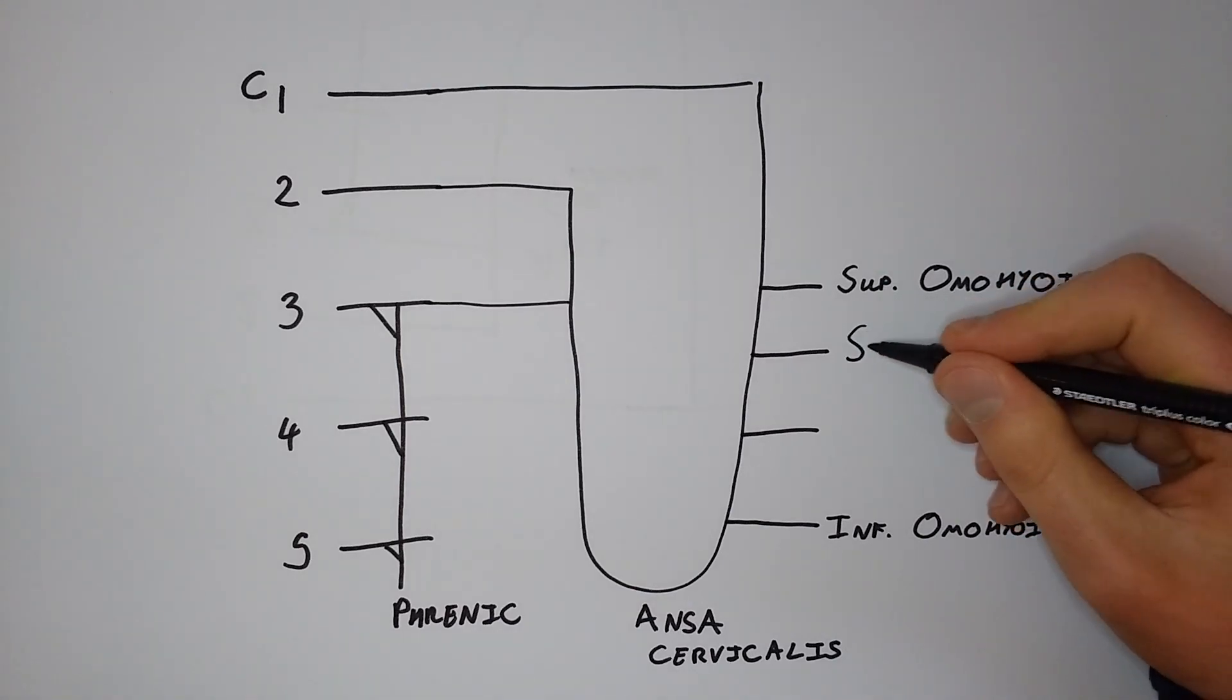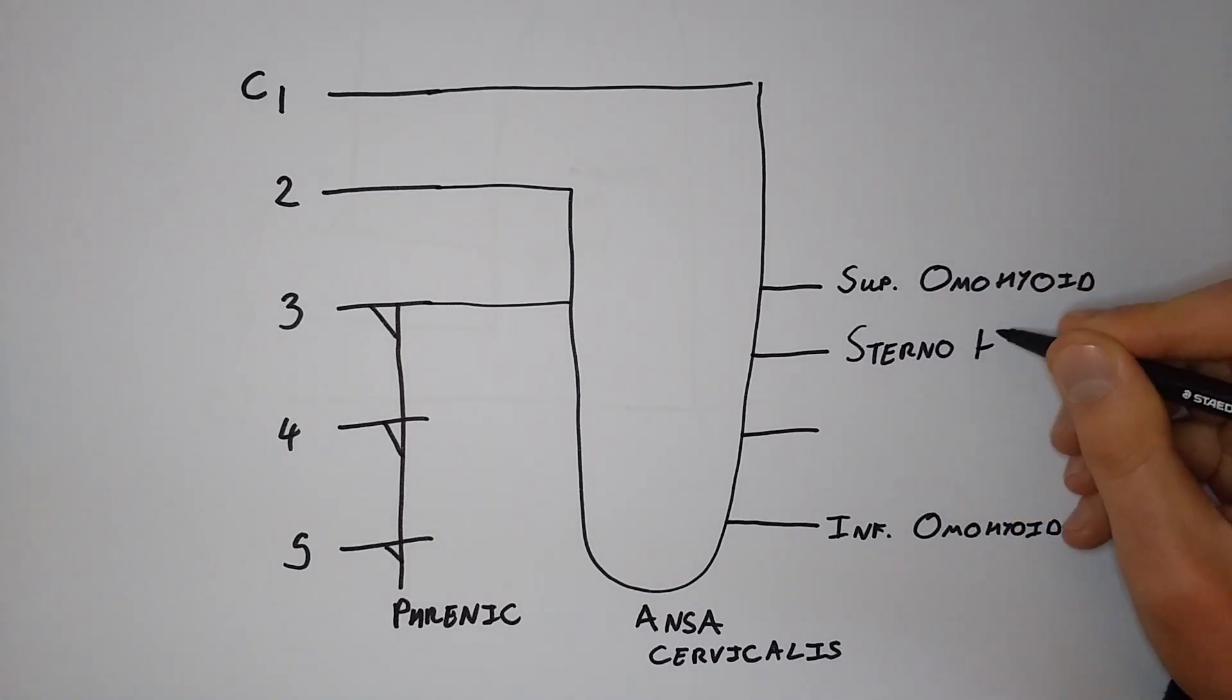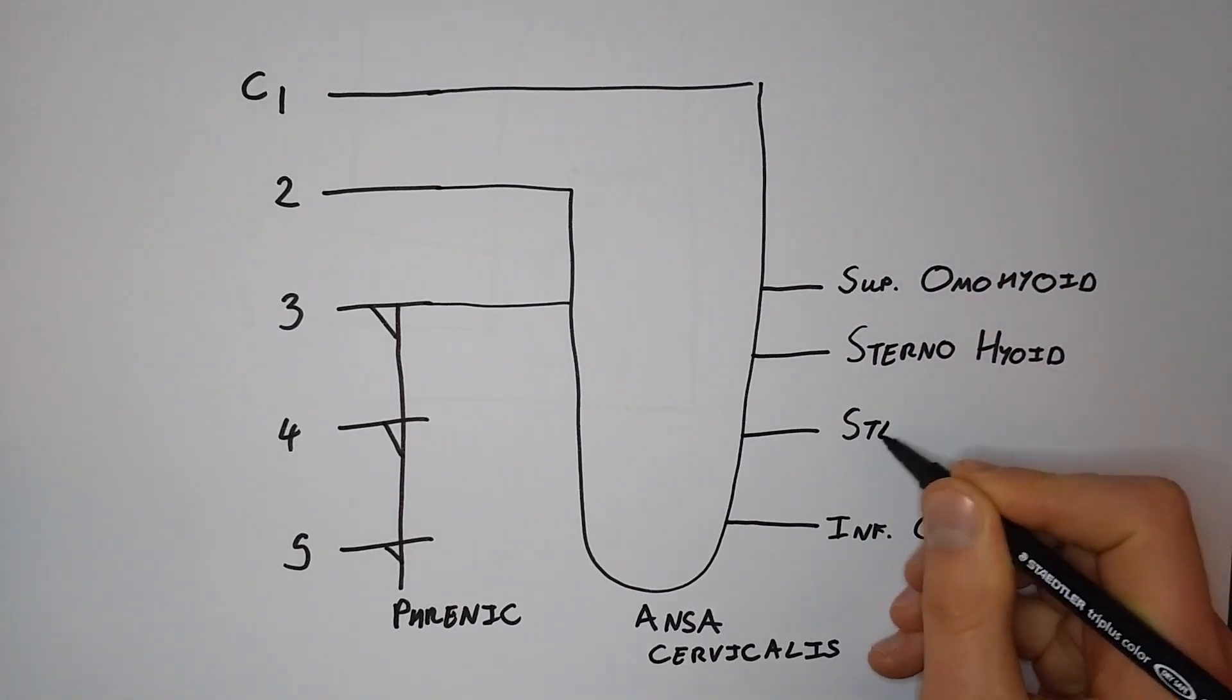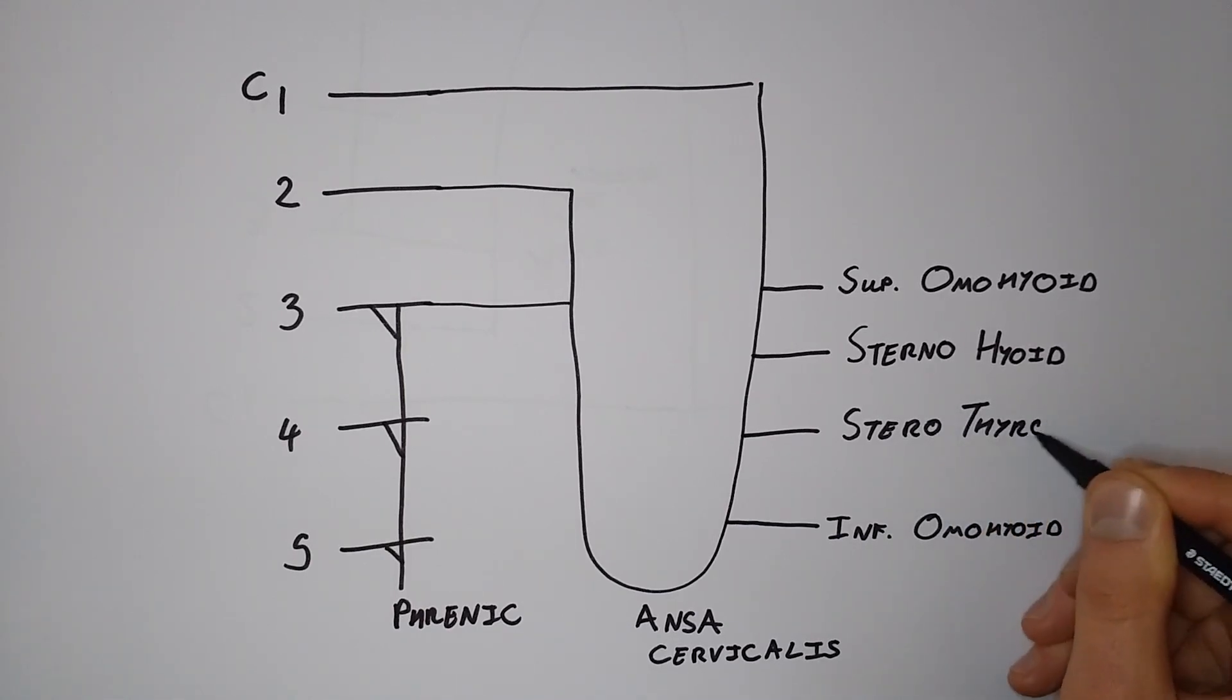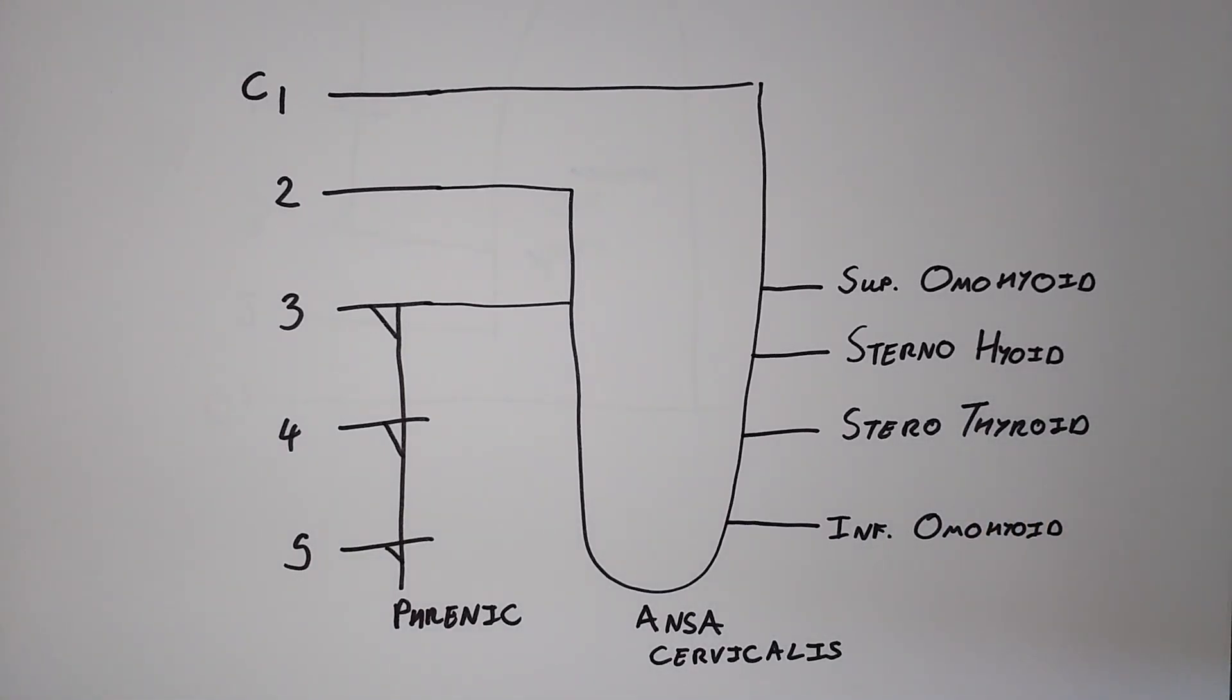The two nerves that will come off between these two nerves are the sternoinfrahyoid muscles: the sternohyoid and the sternothyroid. That's three of our four infrahyoid muscles supplied now.